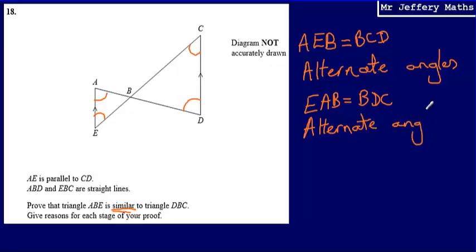Okay, so we've shown that two angles on each triangle are the same. We now need to show that the final one is. So we need to be able to show that this angle here, ABE, is exactly the same as angle CBD.